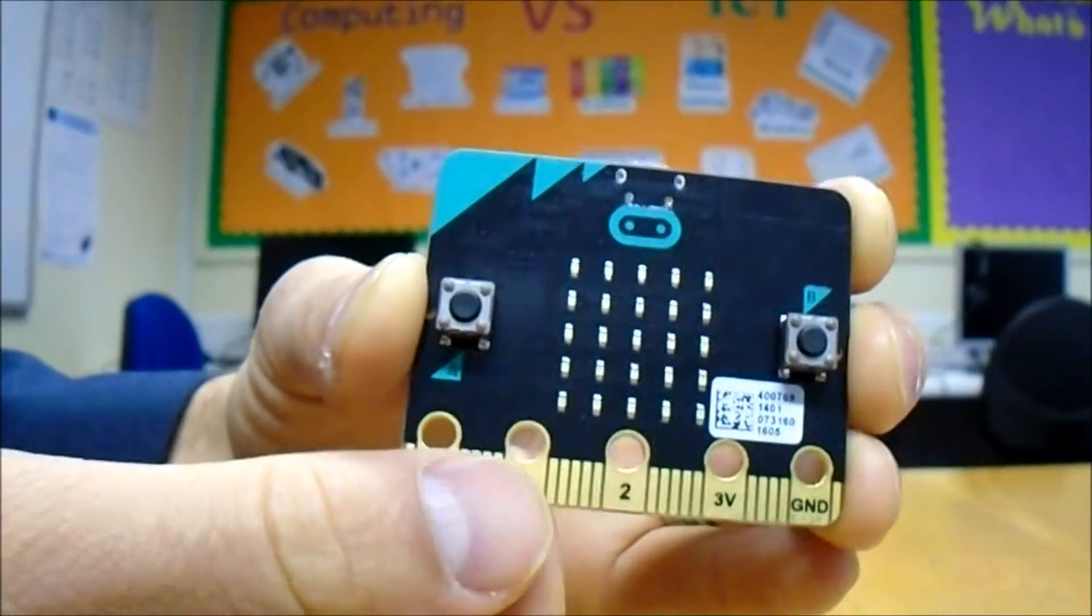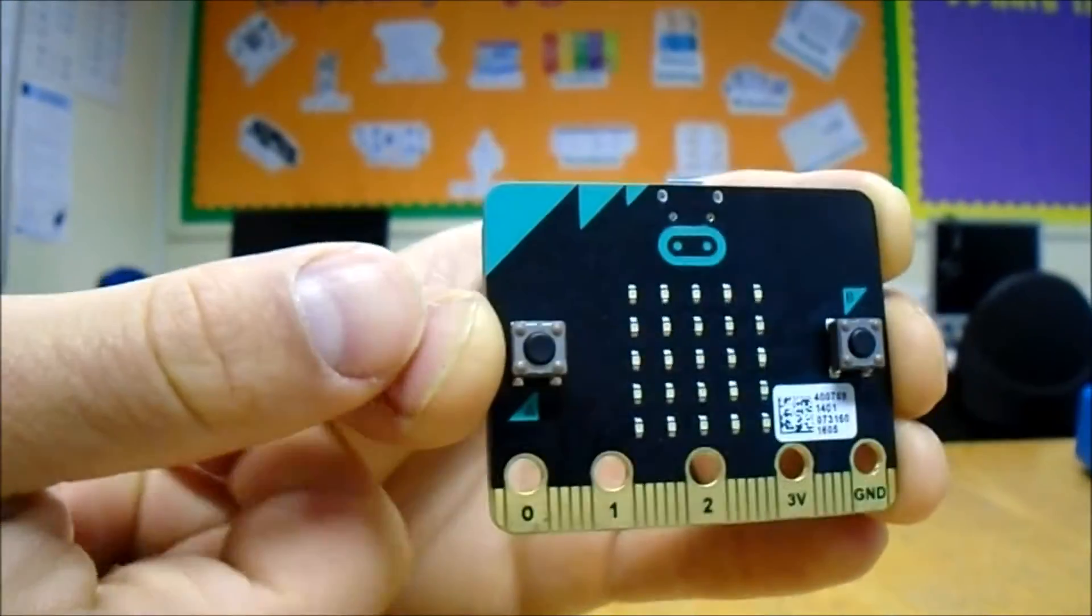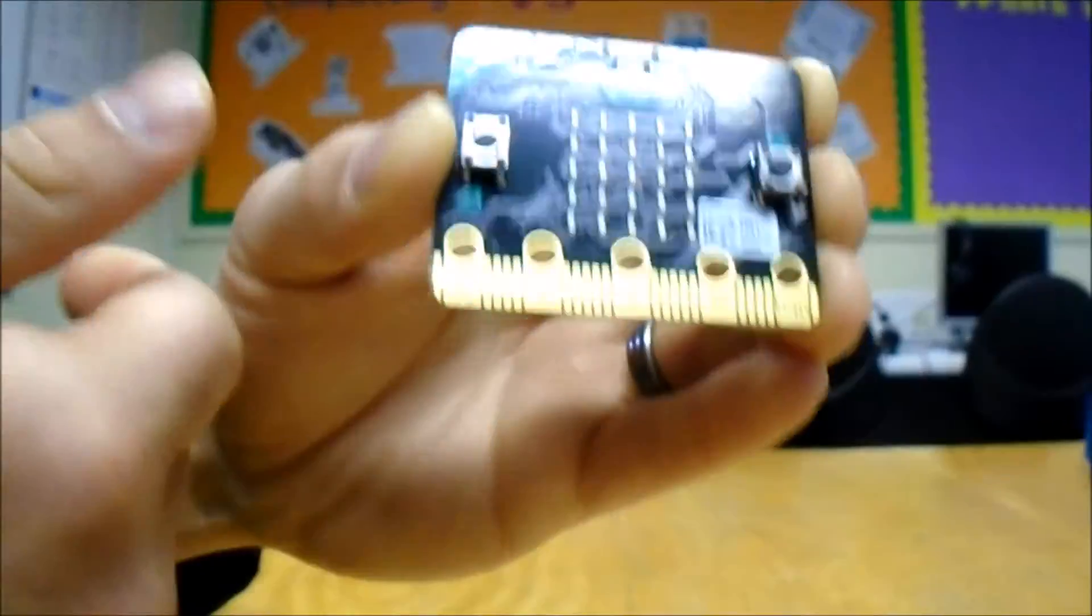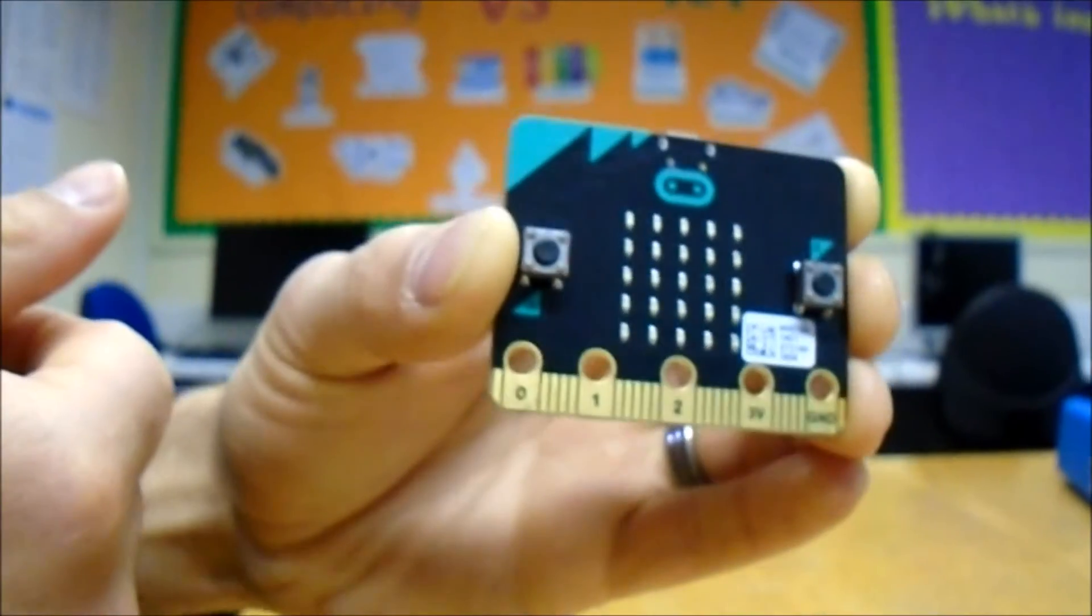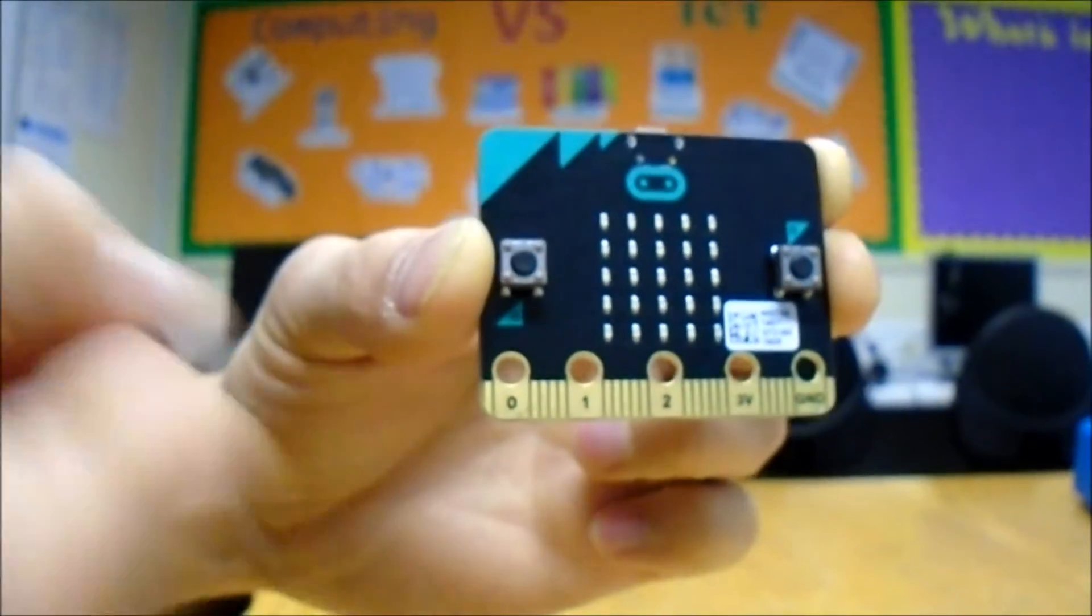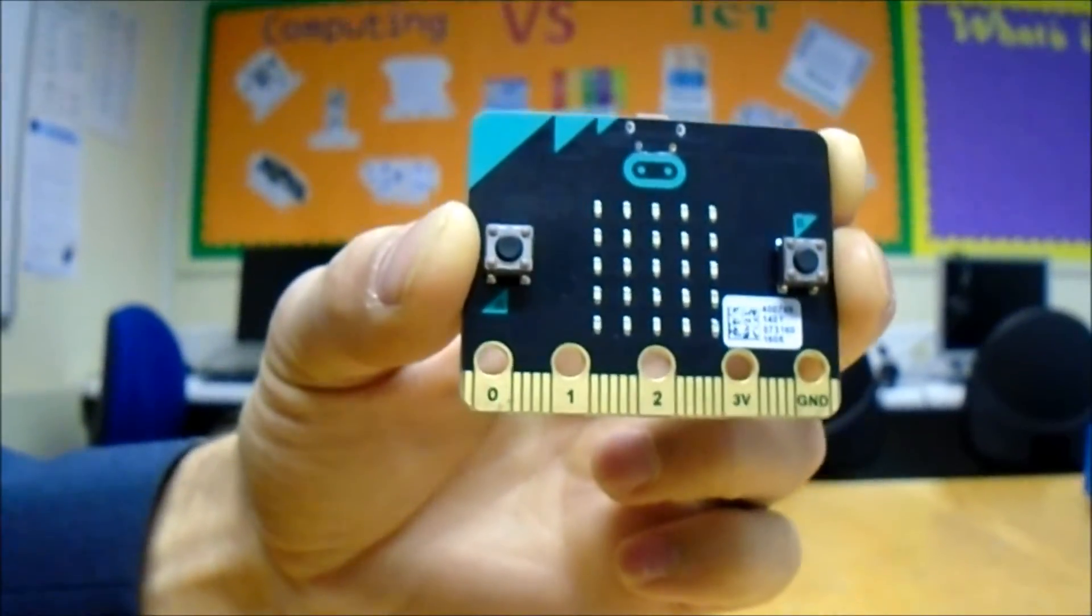Using wires, particularly ones with crocodile clips on, that's what we're going to have a look at. We're going to have a brief little look at how we can attach some things to the micro:bit.